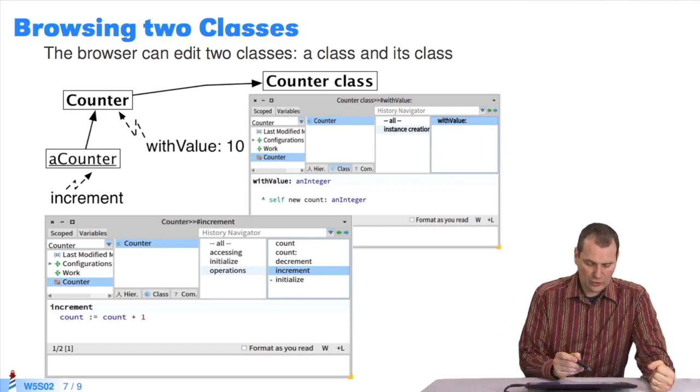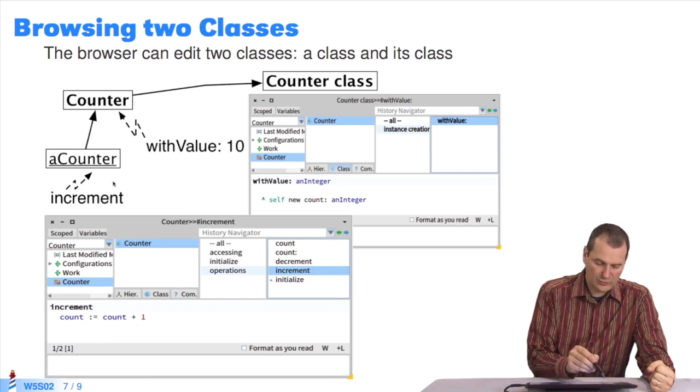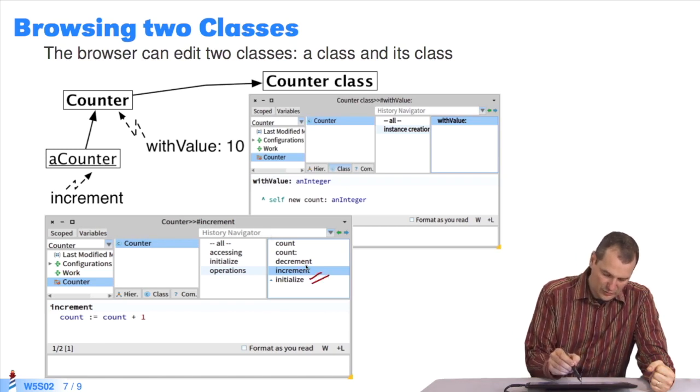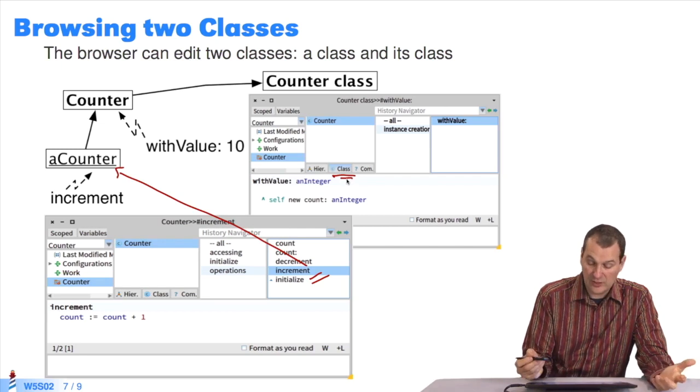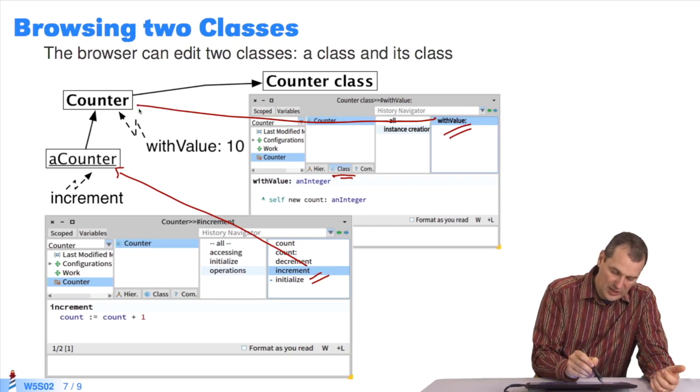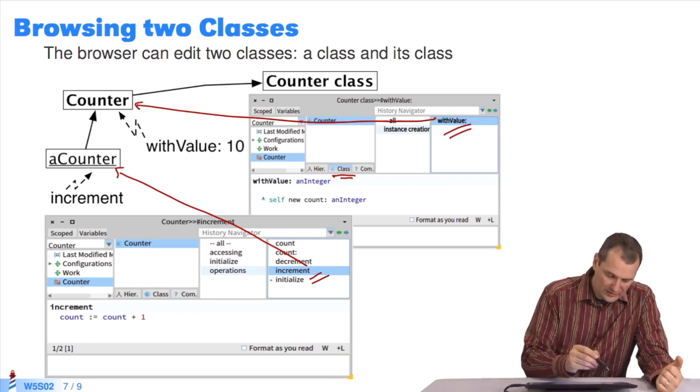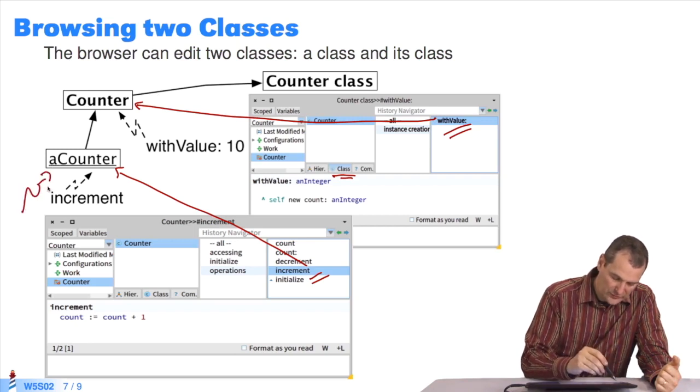but it means that when the browser shows you the counter class, it shows you the code that will be executed on the instances of this class. That means, increment is the code that will be executed on this instance here. When you click on the class button to define a class method, it shows you the code that will be executed on this object here. And in fact, if we look,